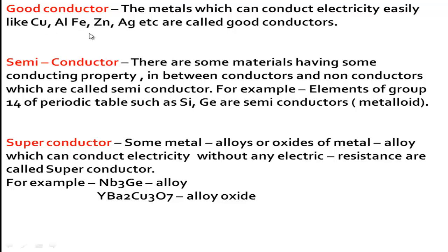Semiconductor: there are some materials having conducting properties in between conductors and non-conductors, which are called semiconductors. For example, elements of group 14 of the periodic table such as silicon and germanium are known as semiconductors or metalloids. These elements have both electric conductivity and electric non-conductivity properties, meaning they are not as good a conductor as metals. They are in a middle position between conductors and non-conductors.